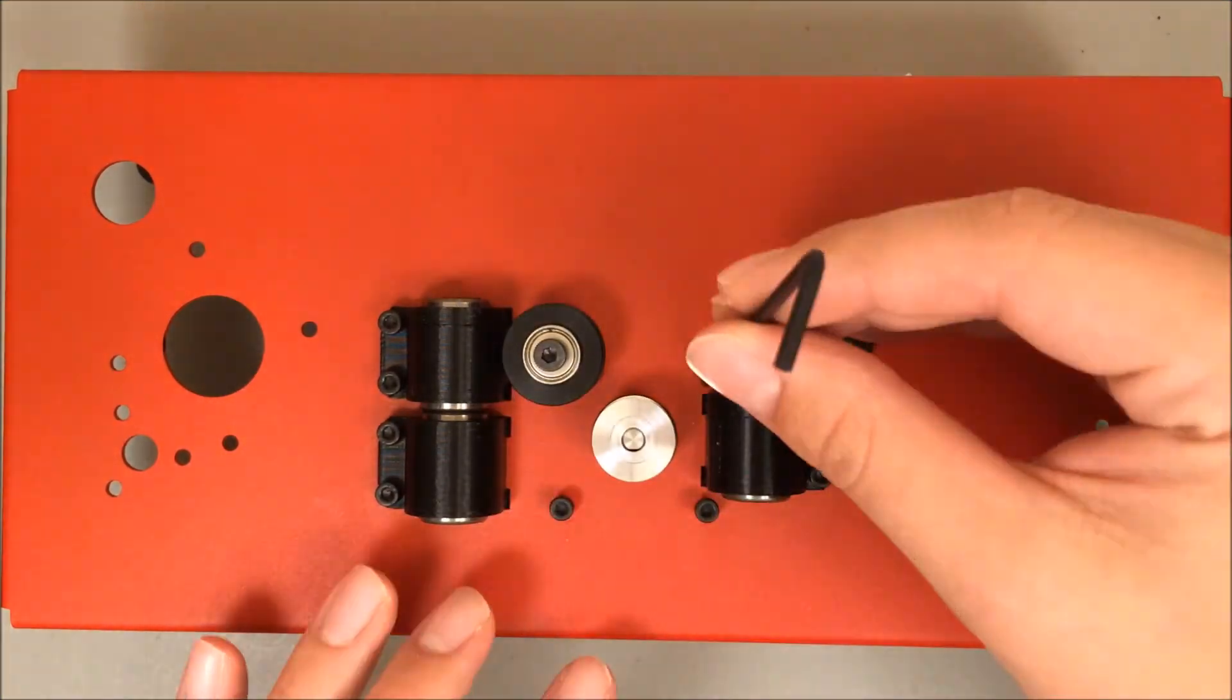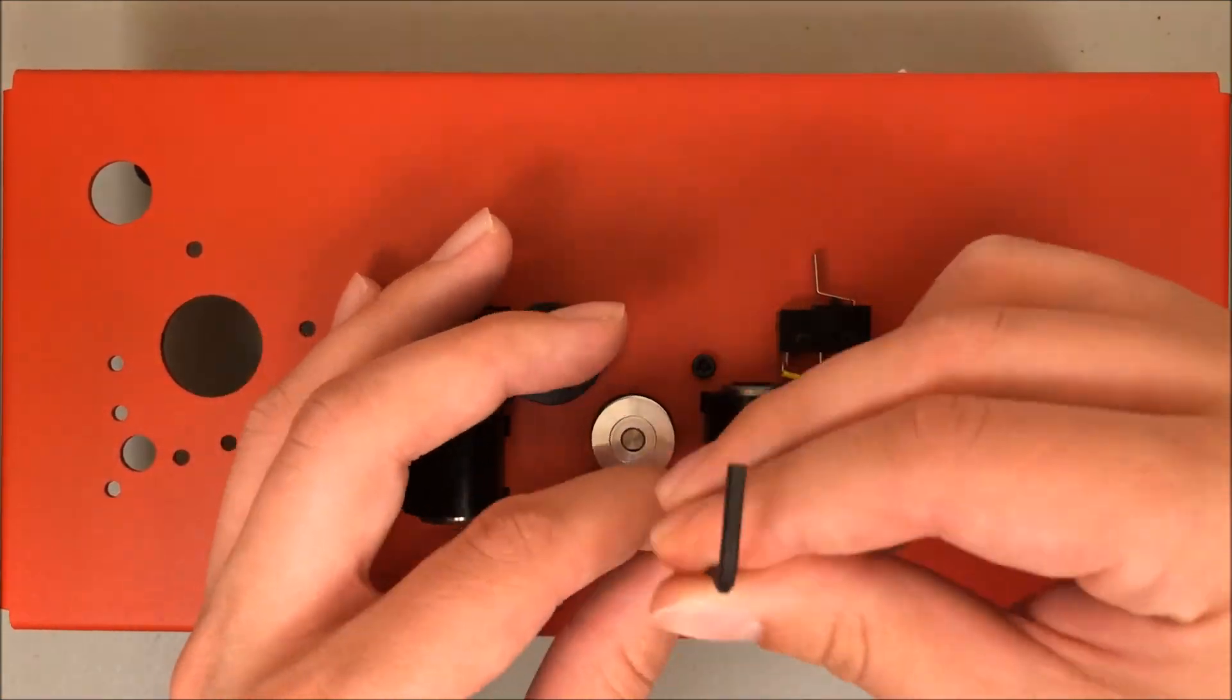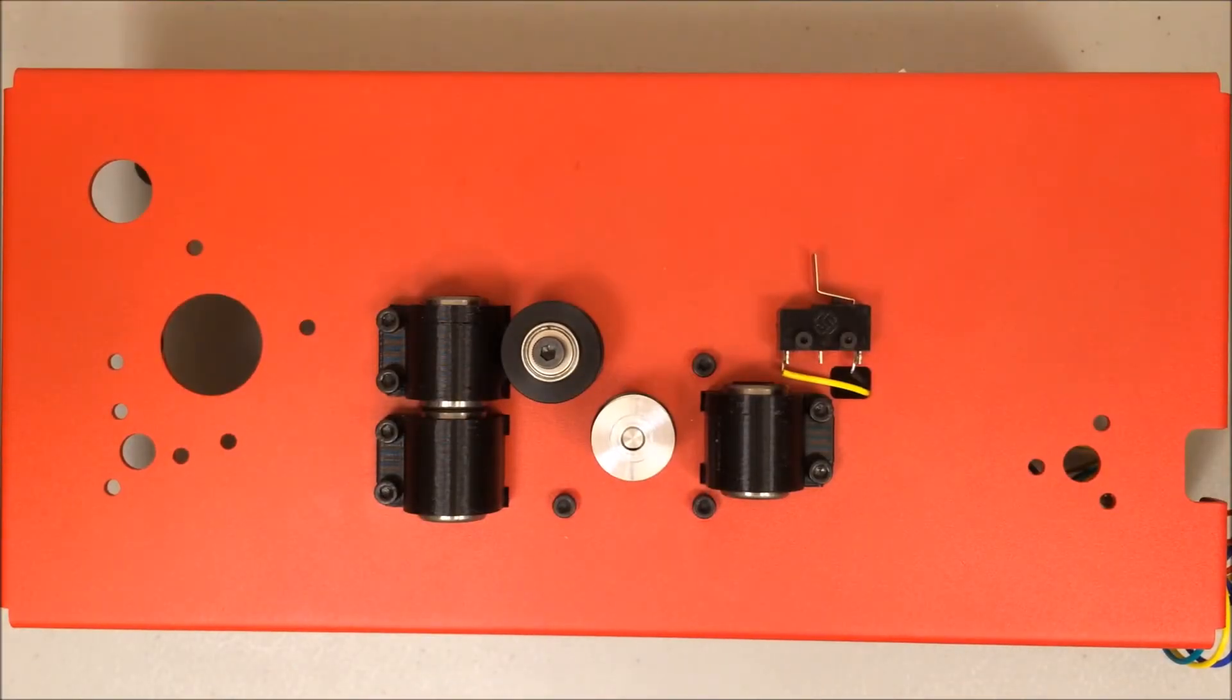Tighten down the screws so they feel firm but do not overtighten them. It's actually pretty easy to rip out the threads in a stepper motor. So just tighten them until they're firm and then you've installed the y-axis motor and pulley.